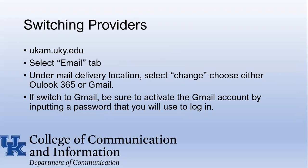Now if you wanted to switch from Outlook to Gmail, here's how you would do that. Go to the account manager page provided by UK, ukam.uky.edu, and put in your credentials. When it loads, select the email tab. Under delivery location, you will see the current email that you have selected. Select change and choose either Outlook 365 or Gmail depending on which one you want to change to. If you switch to Gmail, be sure to activate the Gmail account by inputting a password that you will use to log in. This is toward the bottom of the screen and is very easy and accessible as well.